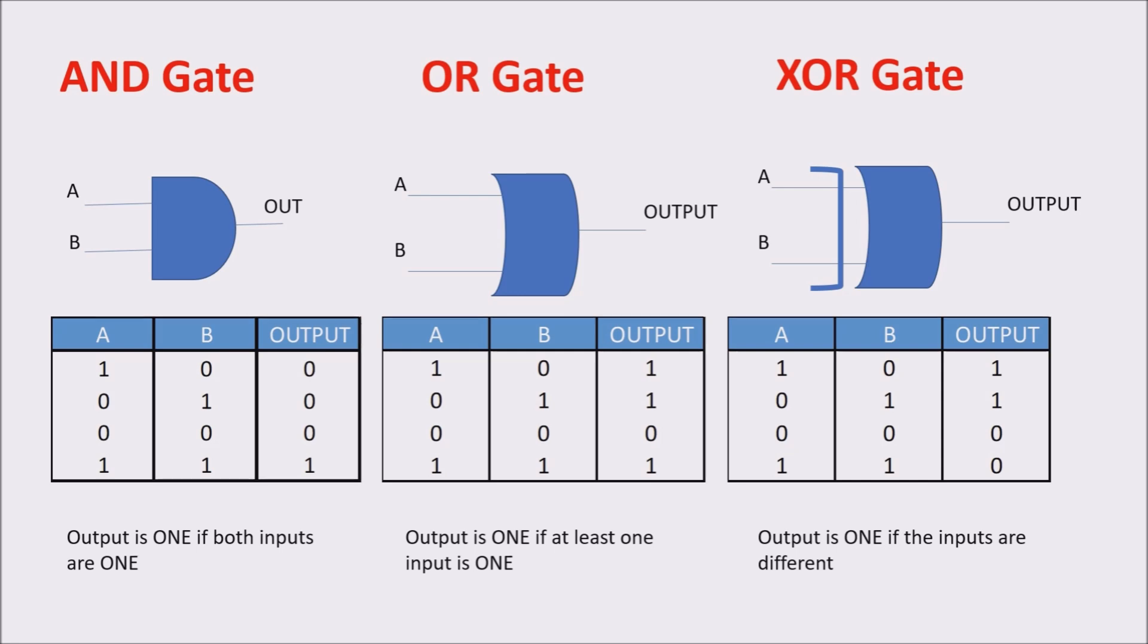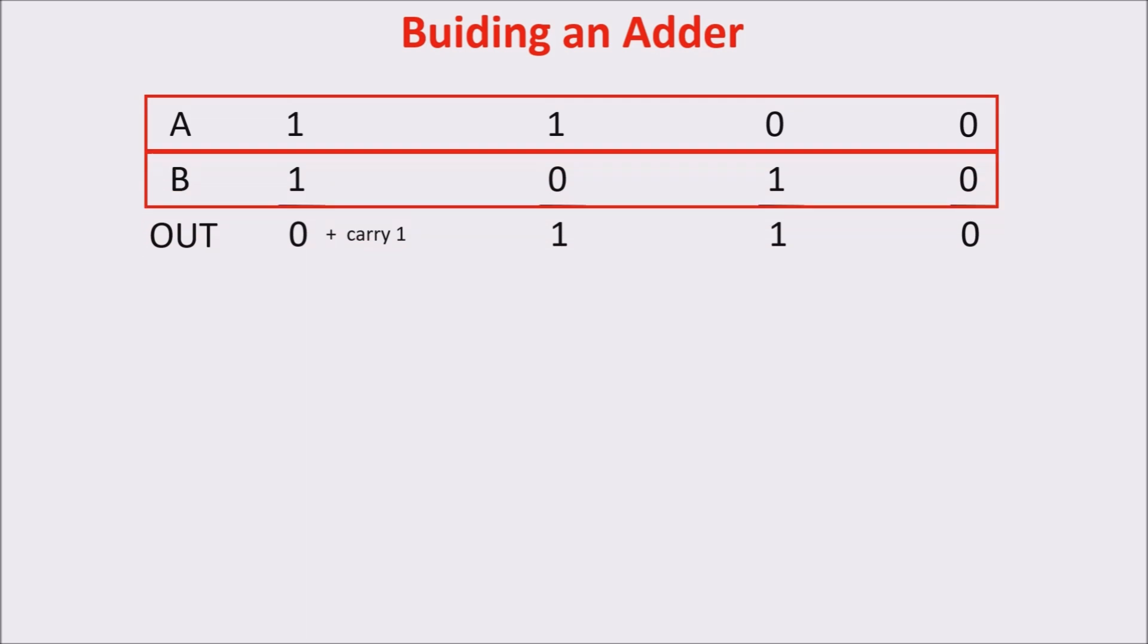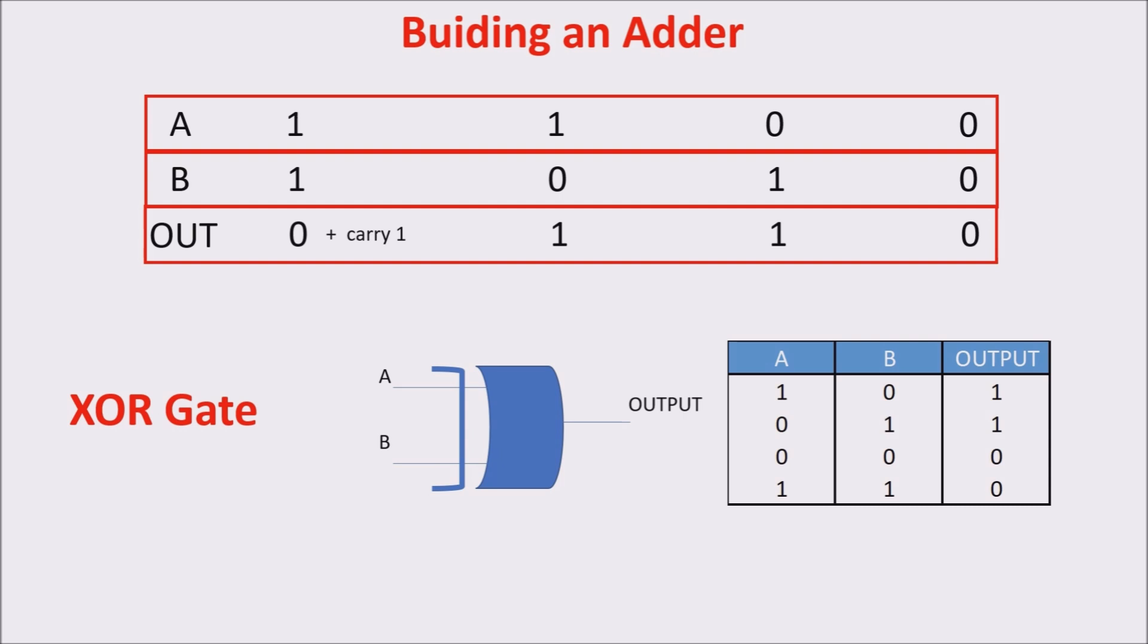With these gates, we are going to build another. Let's focus on adding two bits. These are the possible combinations. We see 1 plus 1 is equal to 0, and for the moment, we forget the carry. 1 plus 0 is equal 1, 0 plus 1 is equal 1, and 0 plus 0 is equal 0. If we consider this as input A, this as input B, and this as the output, you can identify the XOR working because the output is 1 only when the inputs are different. So we use the XOR gate to add 2 bits.